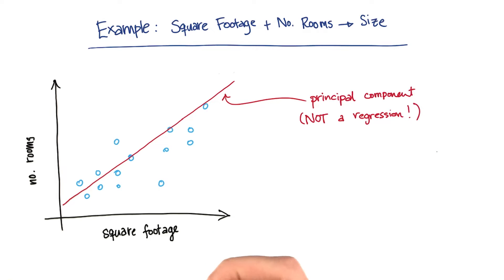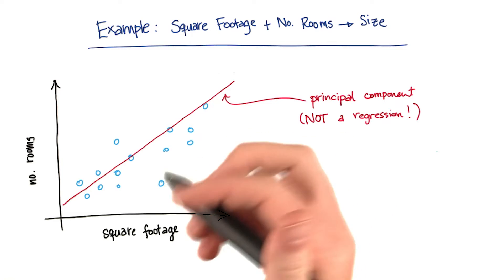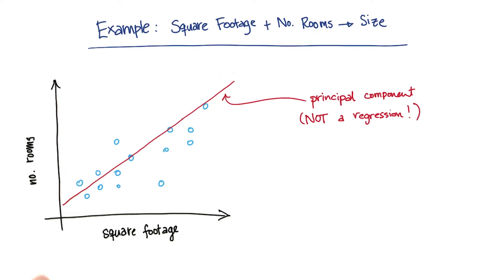With a regression, what you're trying to do is you're trying to predict an output variable with respect to the value of an input variable. Here we're not really trying to predict anything. We're trying to come up with a direction in the data that we can project our data onto while losing a minimal amount of information.